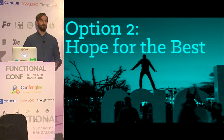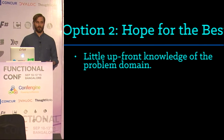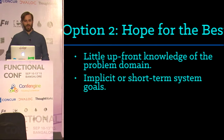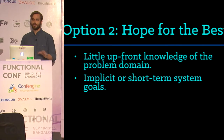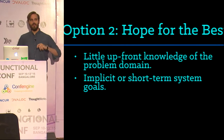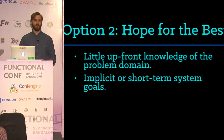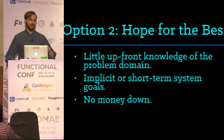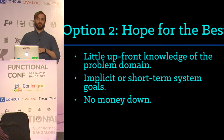Option two is what most everybody does: hope for the best. You build a thing and hope really hard it's going to work out in practice. You need little upfront knowledge of the problem domain — you just go to it, put a laptop down, put a bunch of coffee or tea down, and hope for the best. You have implicit or short-term system goals — maybe you're in a startup environment, maybe you're a researcher. You're just trying to get something that passes tests, just trying to get something that someone will put their credit card down for. The other valuable thing about hoping for the best is that it takes no money to get something onto the road.